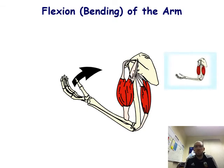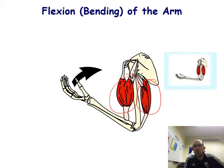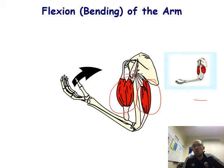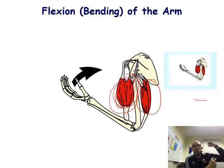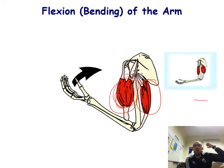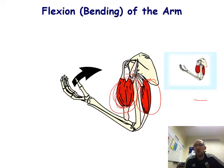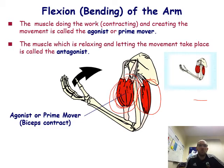Looking at antagonistic muscles in the arm: you have the bicep here and the tricep here. As you lift the arm up, the bicep gets bigger — shorter and fatter. As you move it down, the tricep gets fatter and bigger. All our muscles work in antagonistic pairs: as the bicep contracts and gets shorter and fatter, the tricep relaxes, getting longer and thinner.